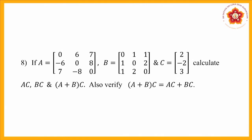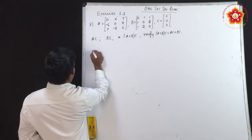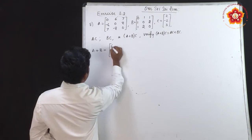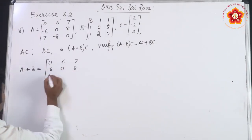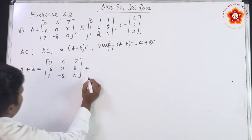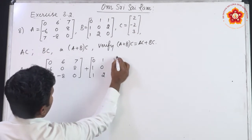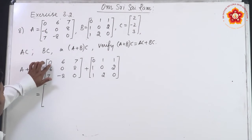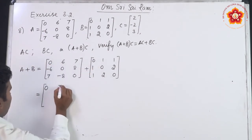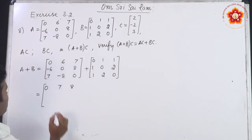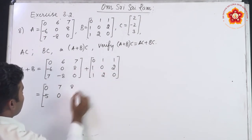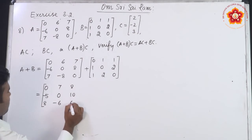Next is a problem with three matrices where we have to calculate AC, BC, and (A+B)C, then verify the distributive law. First, let us find A+B. A = [0,6,7; -6,0,8; 7,-8,0] and B = [0,1,1; 1,1,0; 2,1,2; 0]. Adding gives A+B = [0,7,8; -5,0,10; 8,-6,0].